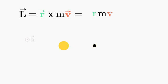If we consider out of the page to be positive, and the angular momentum is positive, then the object is circulating counterclockwise. If the angular momentum is negative, the object is circulating clockwise.